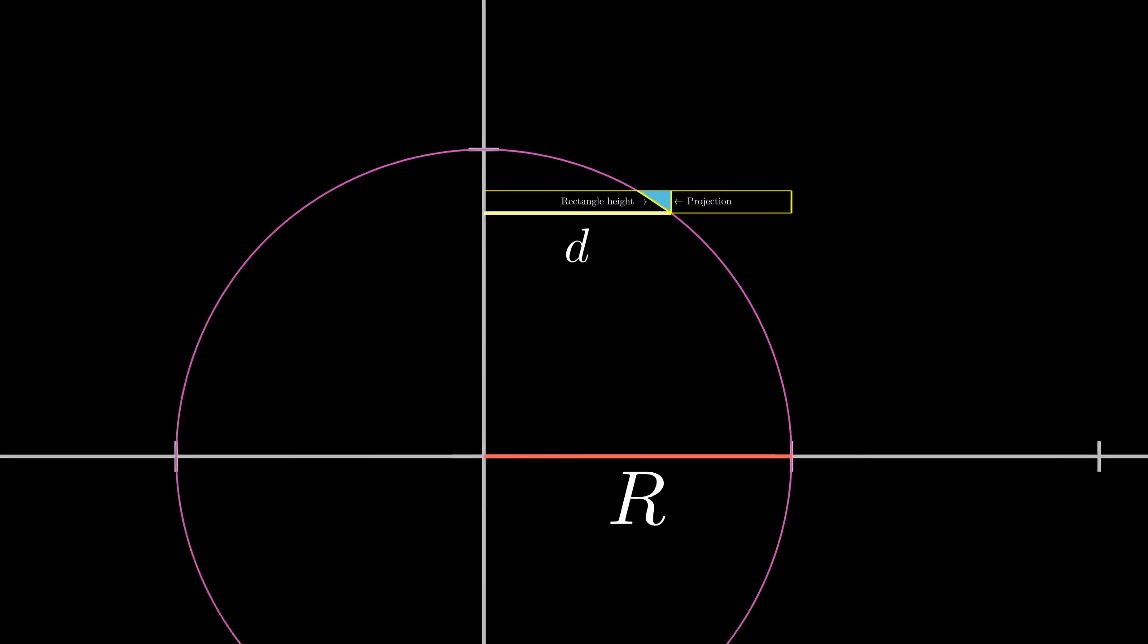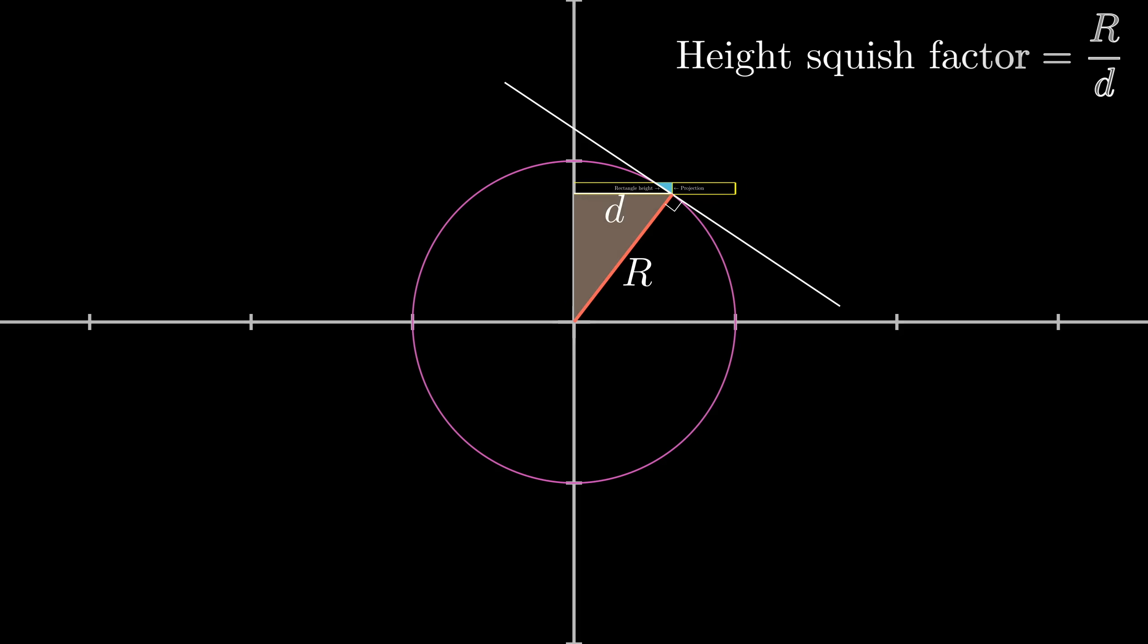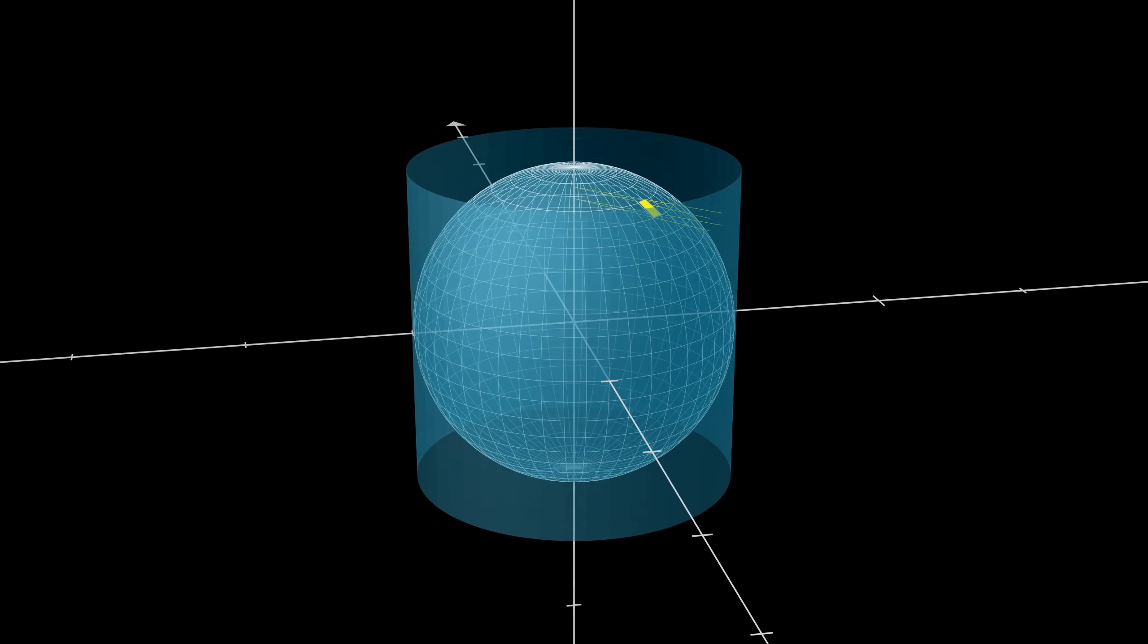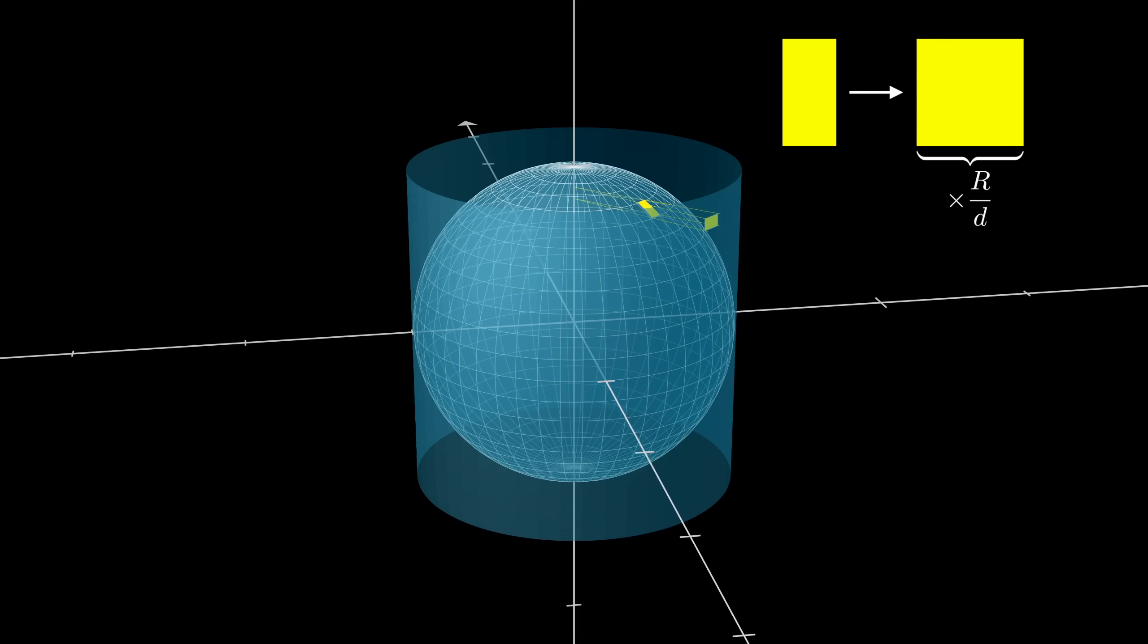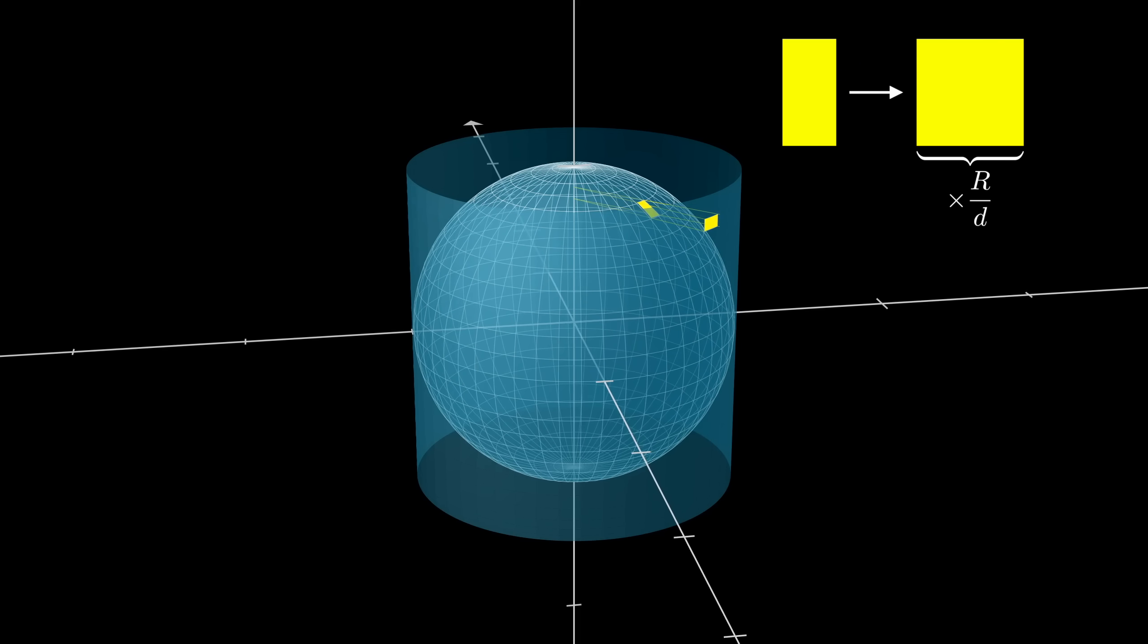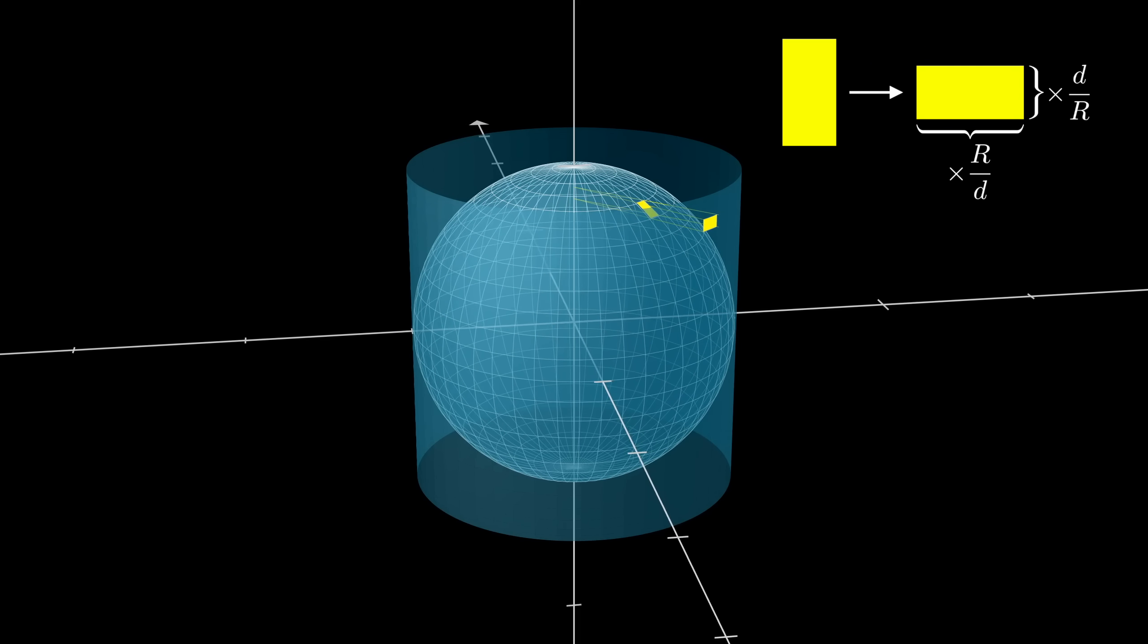By the similarity with the big triangle, the ratio of those two sides is, again, r divided by d. So indeed, as this rectangle gets projected outward, the effect of stretching out the width is perfectly cancelled out by how much that height is getting squished due to the slant.